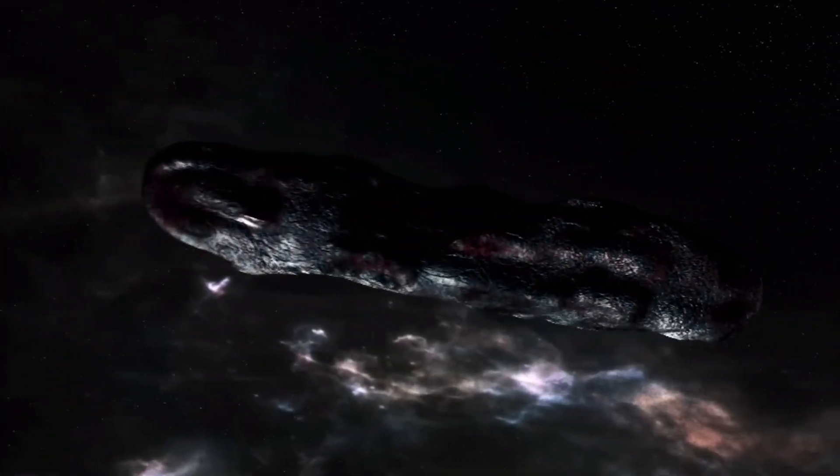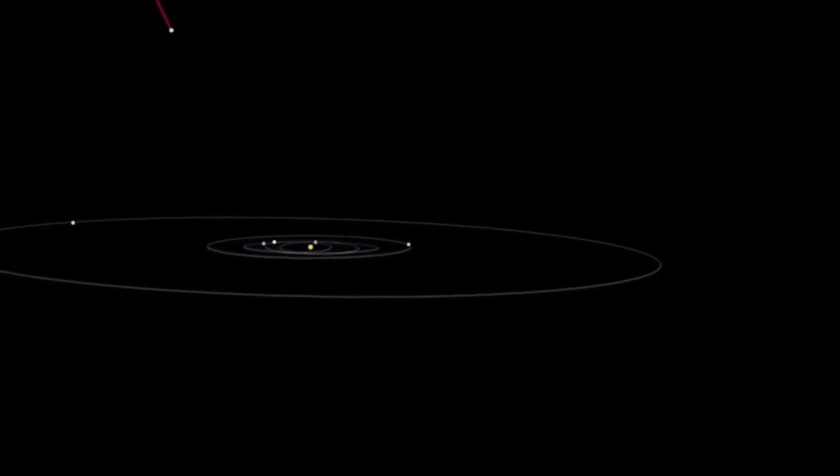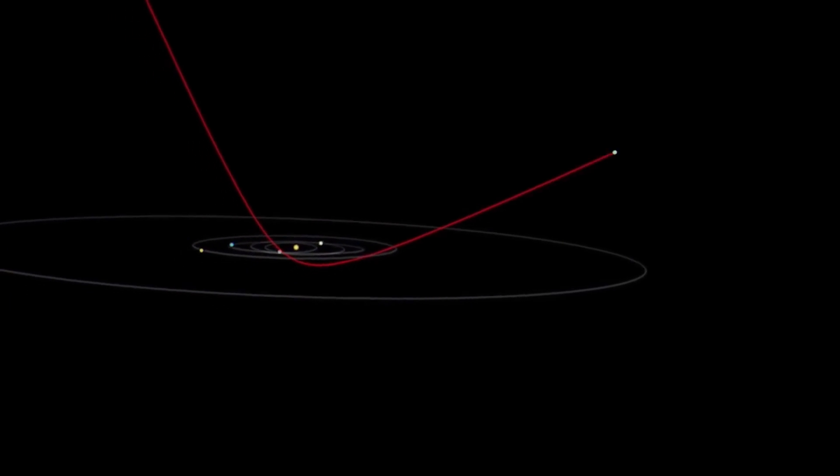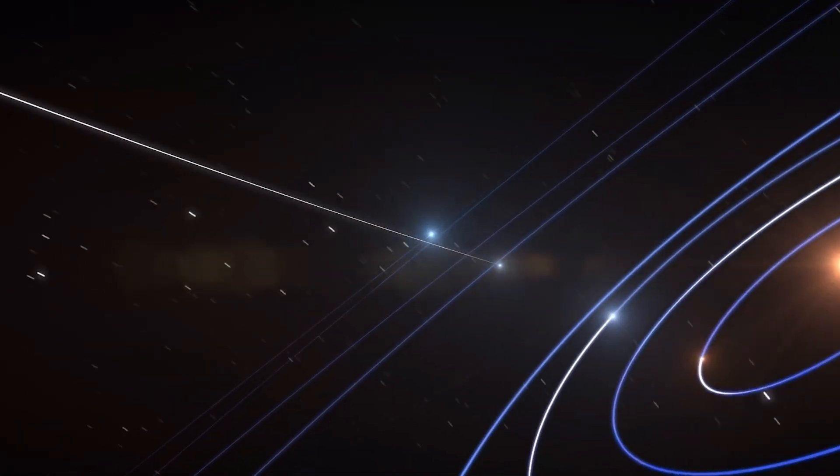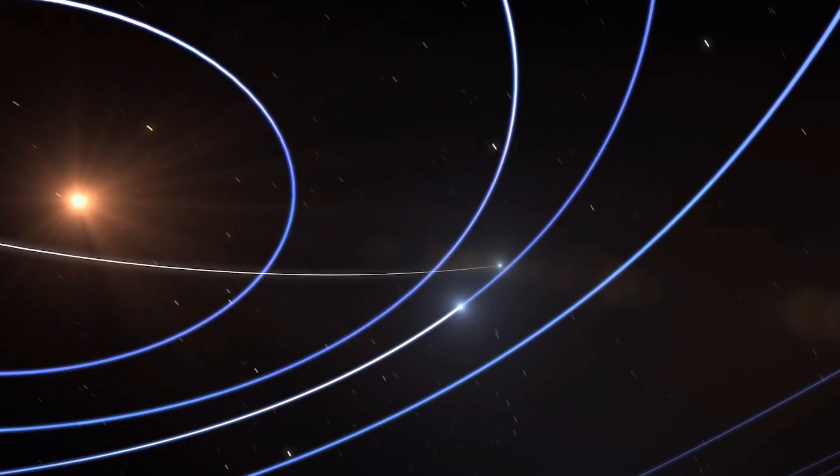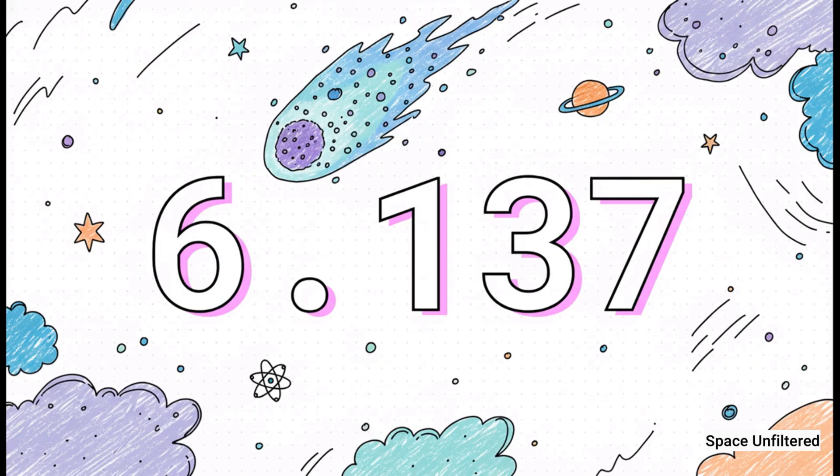3I Atlas, on the other hand, follows what's called a hyperbolic trajectory. It's on a one-way trip, just passing through our neighborhood before it continues its long journey into deep space. This is confirmed by its orbital eccentricity, which is a measure of how much an orbit deviates from a perfect circle.